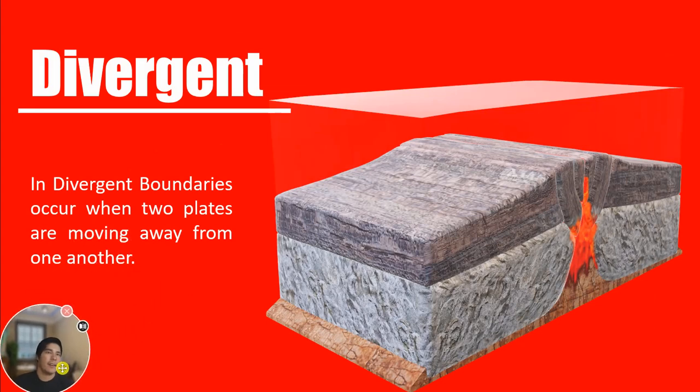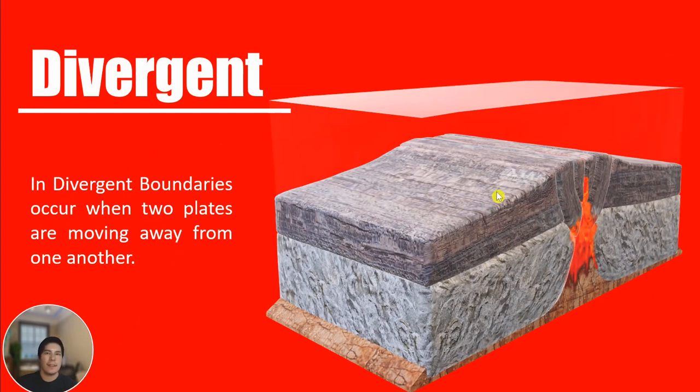Another type of boundary is the divergent boundary, which occurs when two plates are moving away from one another.